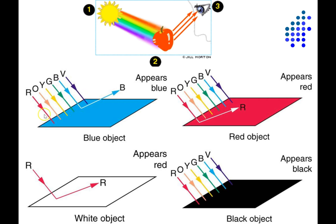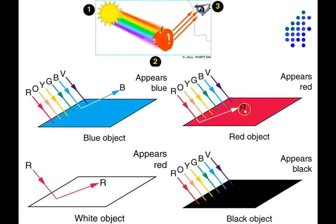Now, light itself does not have a color and objects themselves don't have a color. It turns out color is really your subjective perception. Objects just reflect different wavelengths of light in different amounts. So an object that appears blue is bouncing back mainly these shorter wavelengths and absorbing the other wavelengths of light. Likewise, an object that appears red is absorbing most of these short and medium wavelengths and just reflecting the long wavelengths.